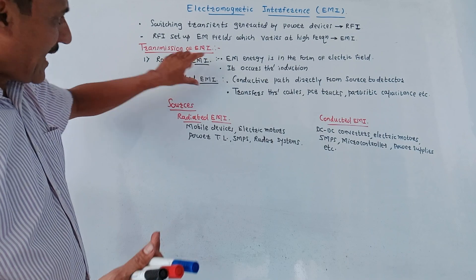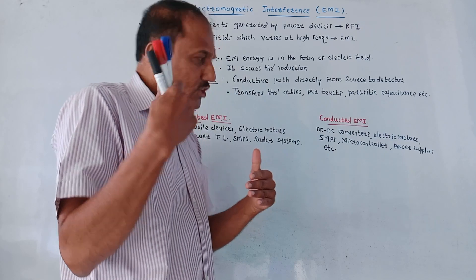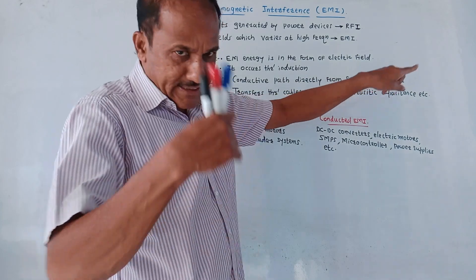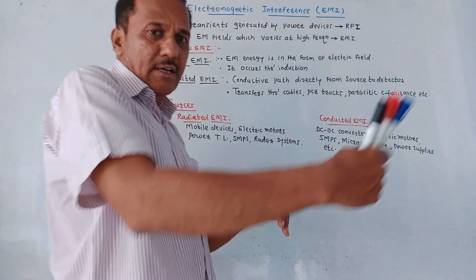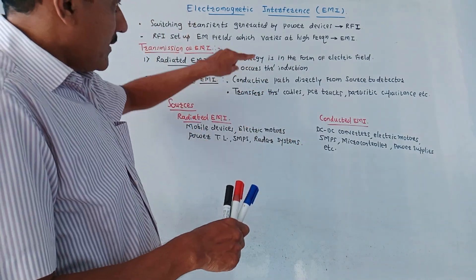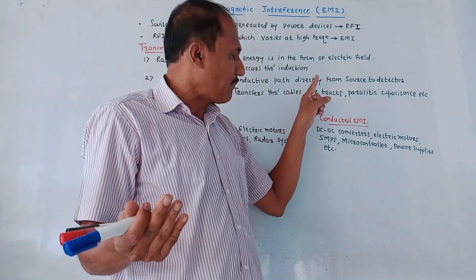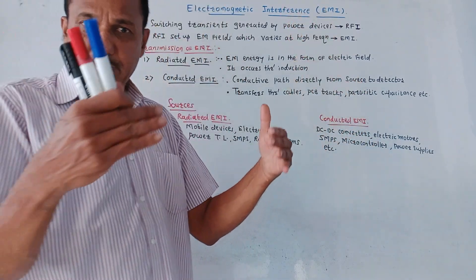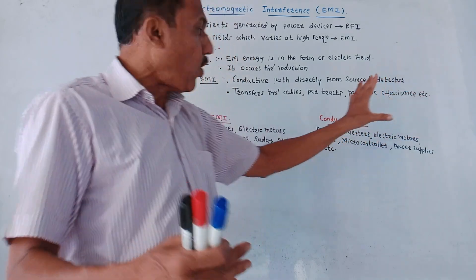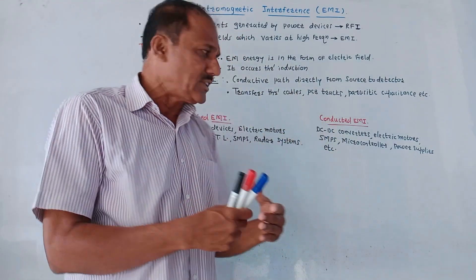Second is conducted EMI. As the name indicates, this electromagnetic interference gets transferred due to the conduction process. A conductive path is developed directly from source to detector, and through that conductive path the transmission of electromagnetic interference takes place. It gets transferred through cables used for different connections, then through PCB tracks, and also due to the effect of parasitic capacitance and so on.